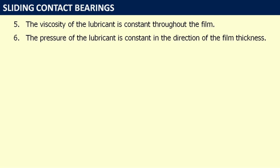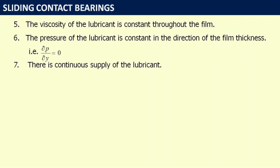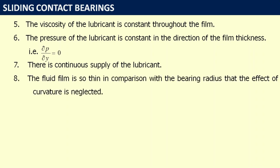Sixth, the pressure of the lubricant is constant in the direction of the film thickness — that is, del P by del Y is equal to zero. Seventh, there is continuous supply of the lubricant. Eighth, the fluid film is so thin in comparison with the bearing radius that the effect of curvature is neglected.